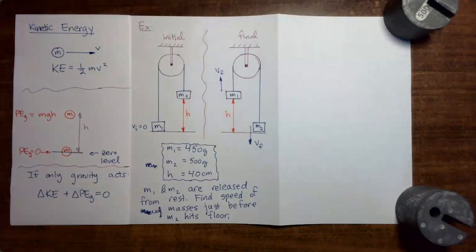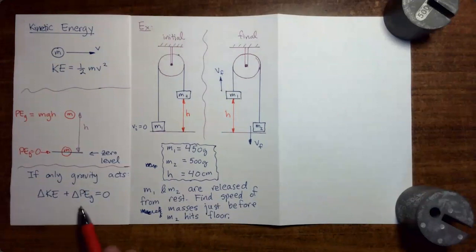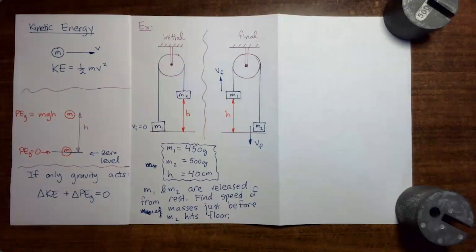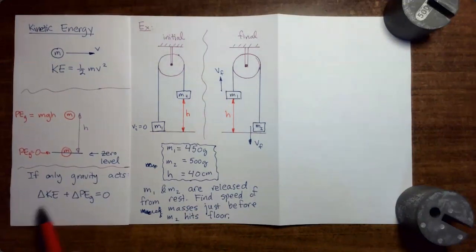One way of formulating the conservation of mechanical energy is to say that if we have a process where only conservative forces act, then the change in kinetic energy plus the change in potential energy is zero. And if the gravitational force is the only force acting, then change in kinetic energy plus change in gravitational potential energy equals zero.